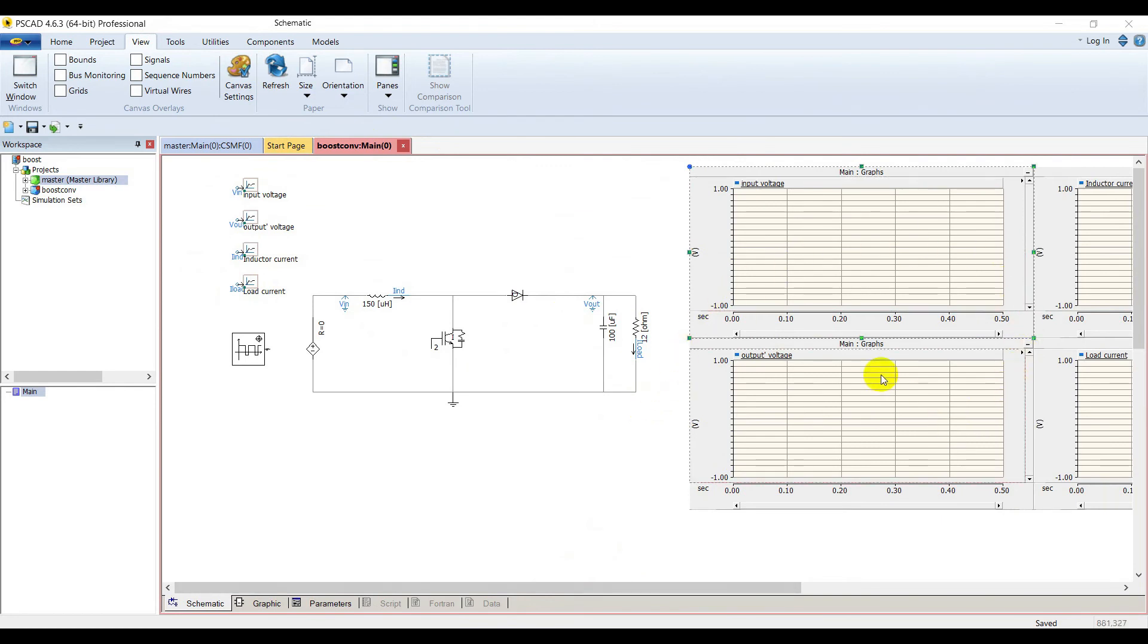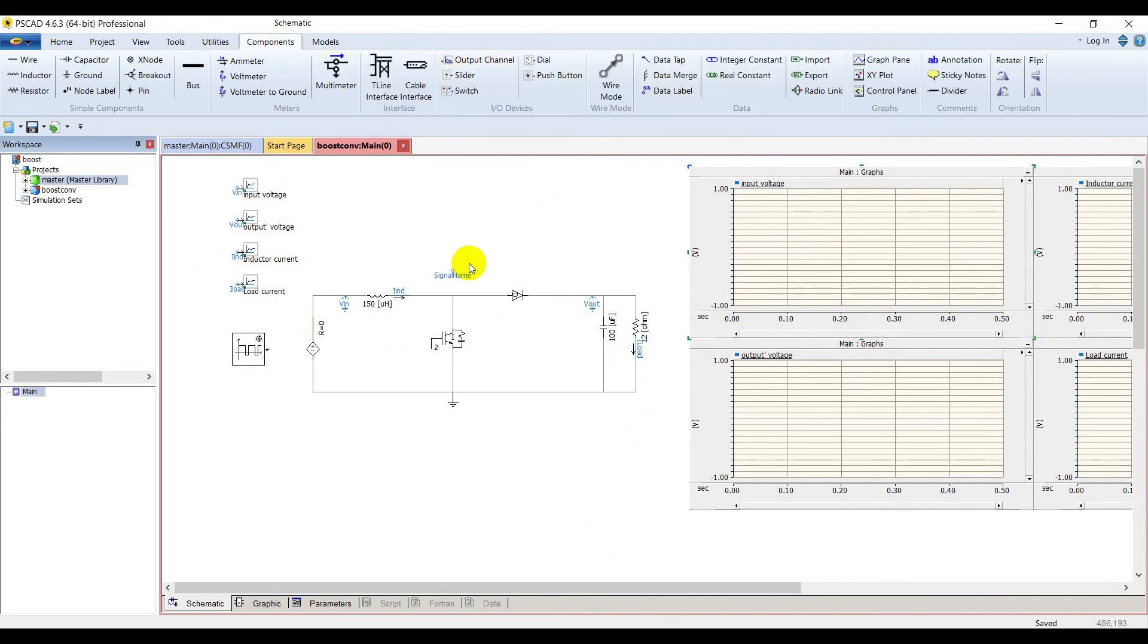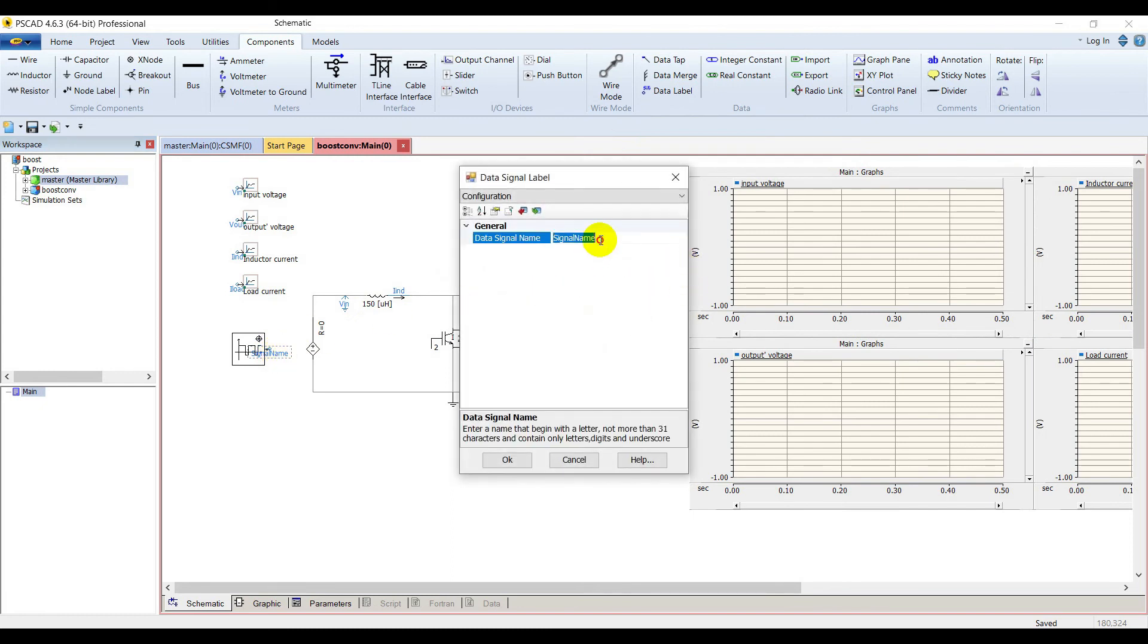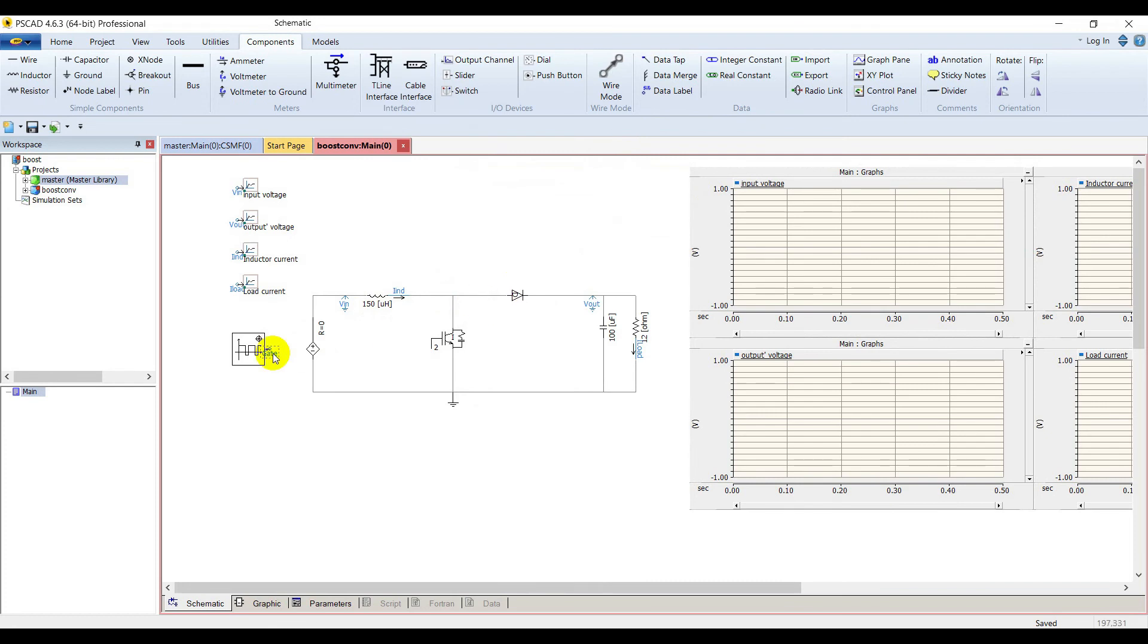We have placed graphs for all our signals. Now let's place a gate label. Select a data label, place it on the output of function generator, name it gate. Copy and paste this label and place it on the gate of your IGBT. Everything is modeled.